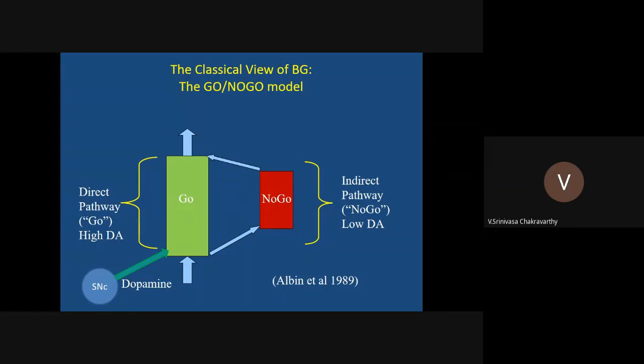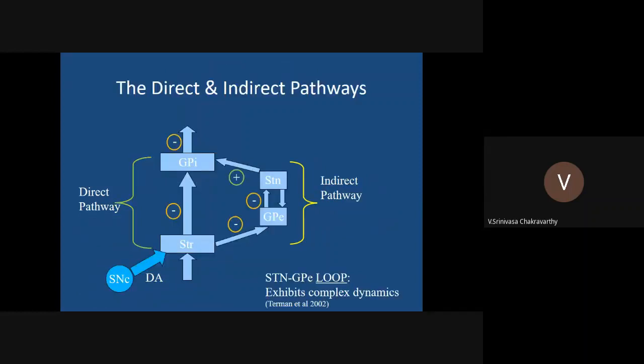If you apply the concepts of reinforcement learning, you need to think about exploration and exploitation. How do you model exploration if it is a complete reinforcement learning engine? Which part of it does exploration? We asked that question and said because of this feedback loop from STN to GPE, you have complex dynamics in STN and GPE, and maybe they are necessary for exploratory action.